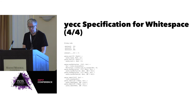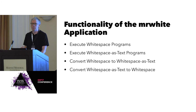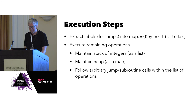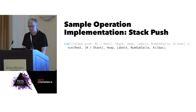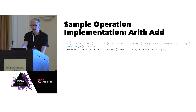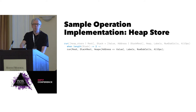This application can execute whitespace programs, execute based on the textual form we saw, and convert back and forth just for kicks. When we run a program, we extract the labels first and keep them in a map of the label pointing to a line number or an index in the list of operations so we can jump as needed. We maintain a stack of integers and a heap as a map. Here's one sample operation: stack push. The first argument is the first element of the operations — stack push and then number — and it just prepends it to the stack. Arithmetic add is similar: get the first two elements on the stack, add them, and replace what had been there. Heap is a little more interesting — we get the address and the value from the top of the stack, and that goes into the map, the address pointing to the value.